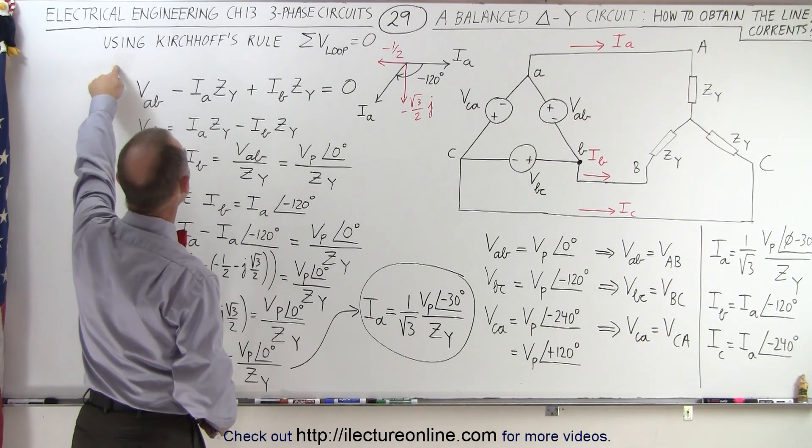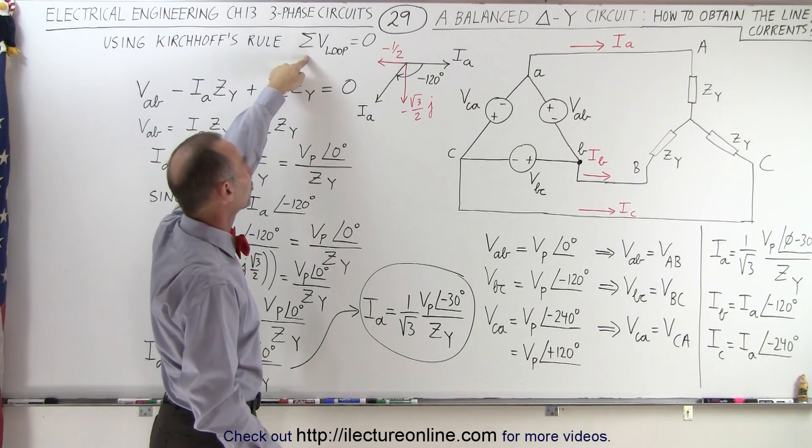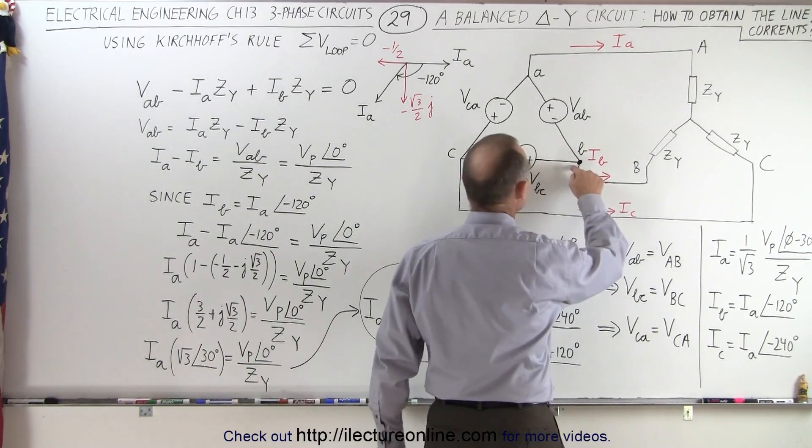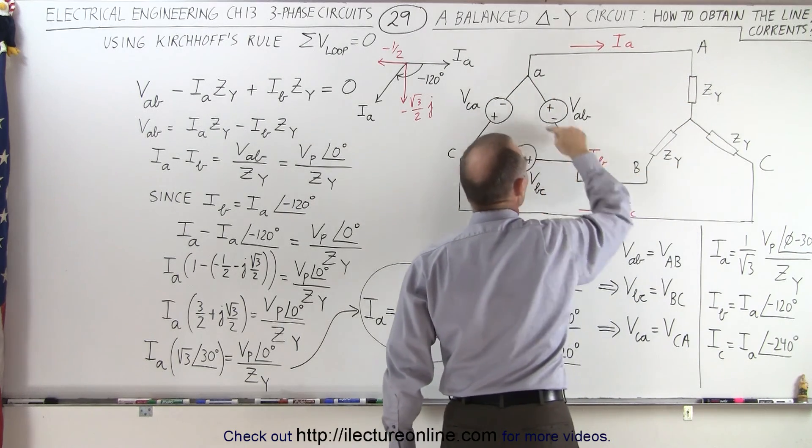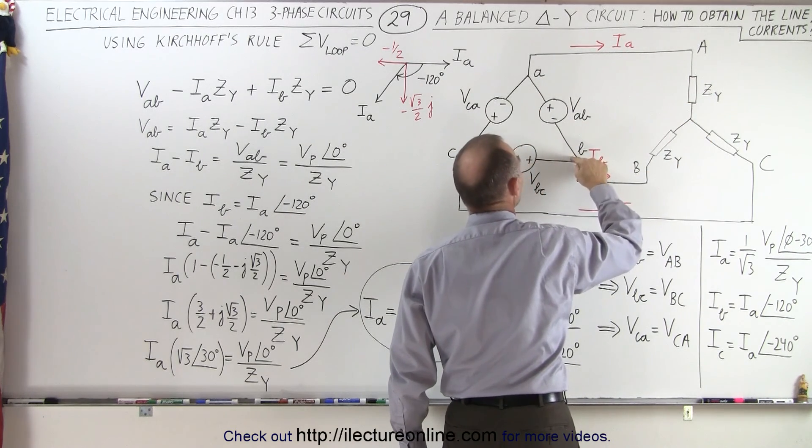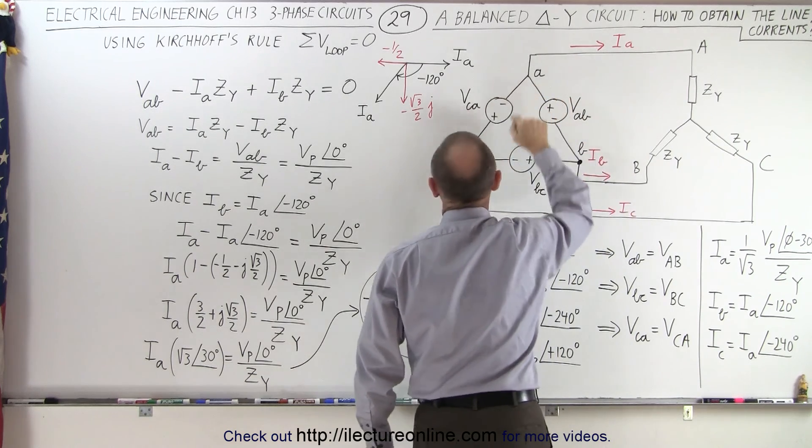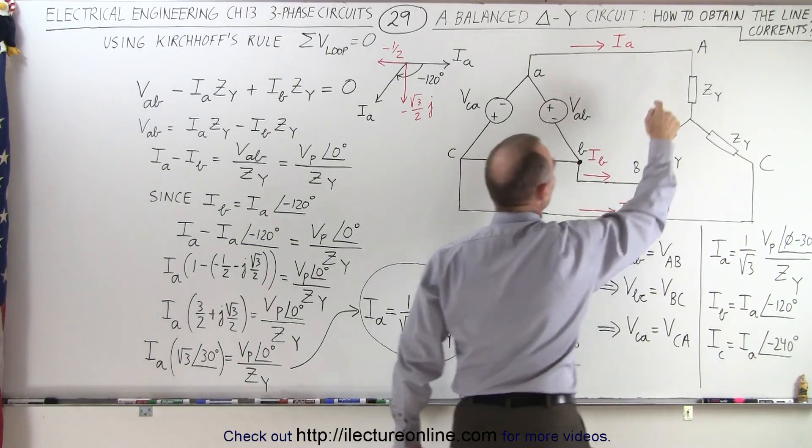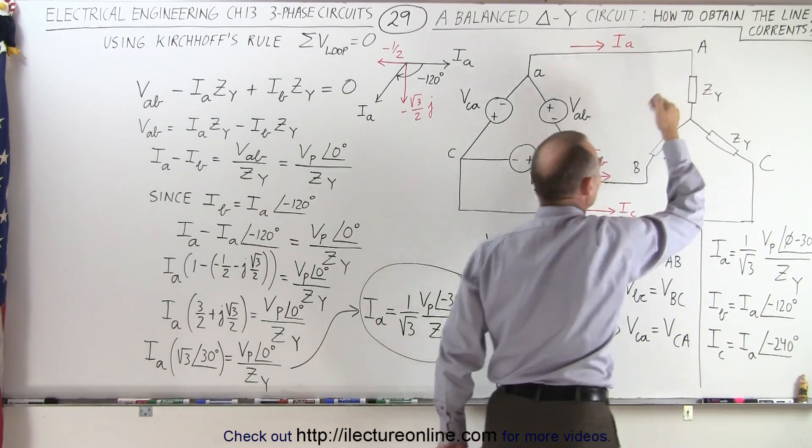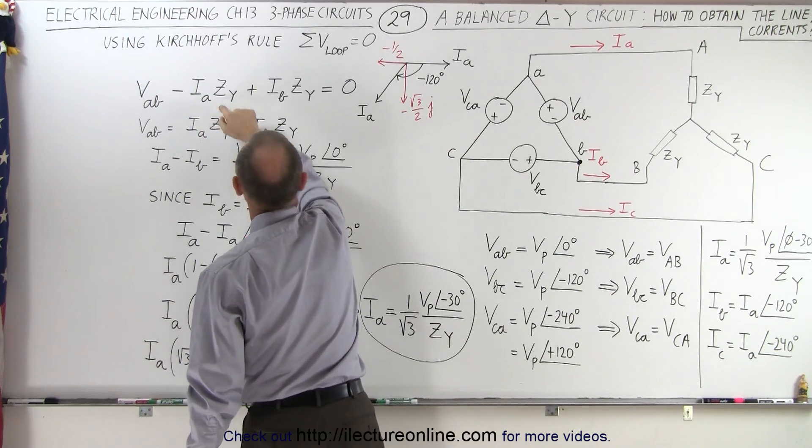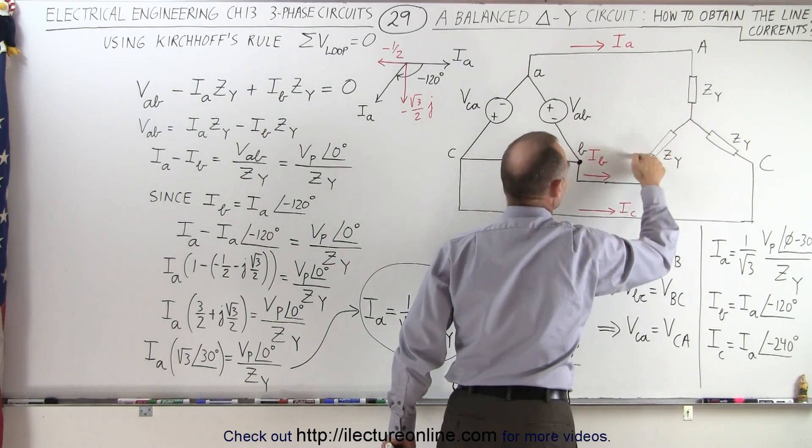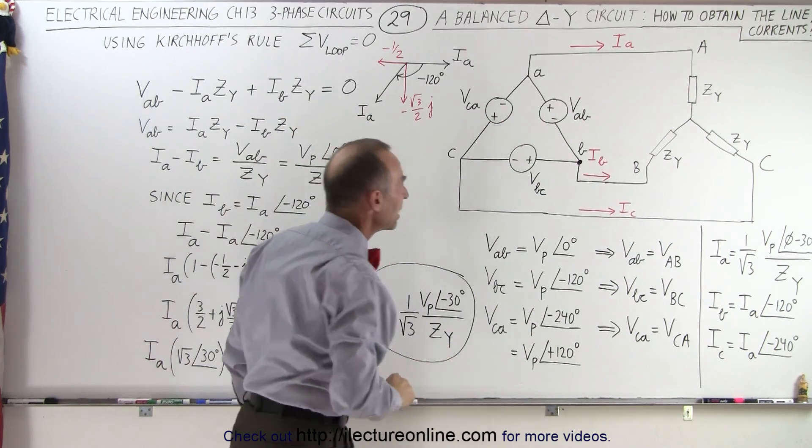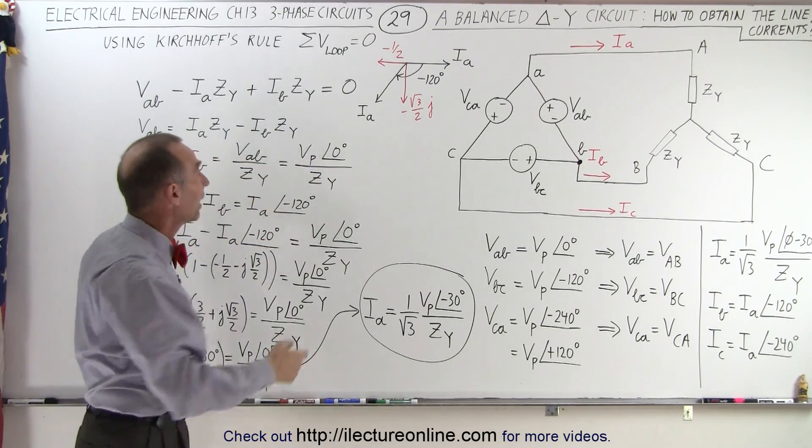What we're going to do here is we're going to use Kirchhoff's rules where we sum up all the voltages around the loop and set it equal to zero. In other words, we're going to start at B and go around the loop like this in a clockwise direction. So we first have the voltage VAB from the negative to the positive terminal, so that's a positive voltage rise of VAB. Then we come across here with the current IA in the same direction, which is a voltage drop, the current times the impedance. And then going across here, we go against the current, so it's a voltage rise of IB times the impedance. And when we add all that up, it adds up to zero.